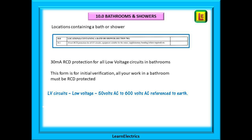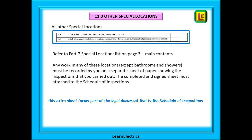Section 10 covers rooms with a bath or shower. The form is for new work — initial verification — and all work in a bathroom must be 30 milliamp RCD protected, as RCD protection is now required for all low voltage circuits in bathrooms or showers that are new or that you have worked on. Section 11 covers all other special locations except bathrooms and showers.